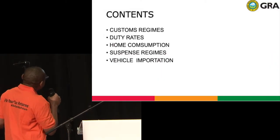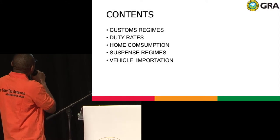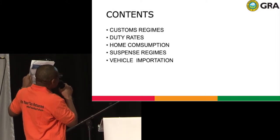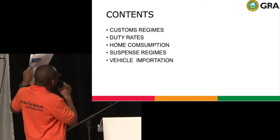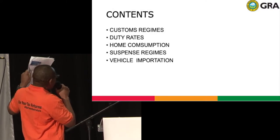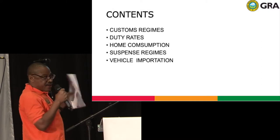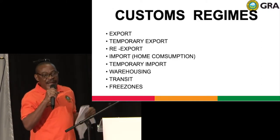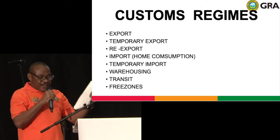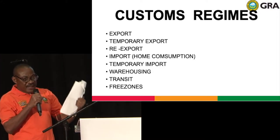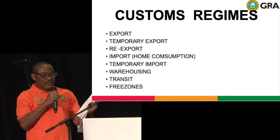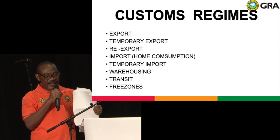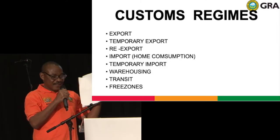So we have several customs regimes. We have the export, temporary export, re-export, import — which is the home consumption — temporary import, warehousing, transit, and free zones. When we say customs regime, that is what will allow you to make a declaration. It depends on the regime; it is the regime that will give you information about the details you need to make the declaration.